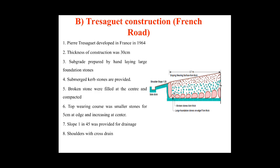The corners of these heavy foundation stones were hammered and the gaps were filled with smaller stones. Broken stones were packed to a thickness of about 8 centimeters and compacted well. The top surface or wearing course was made of smaller stones compacted to a thickness of about 5 centimeters at the edge, gradually increasing towards the center, giving a cross slope of 1 in 45 to provide surface drainage.